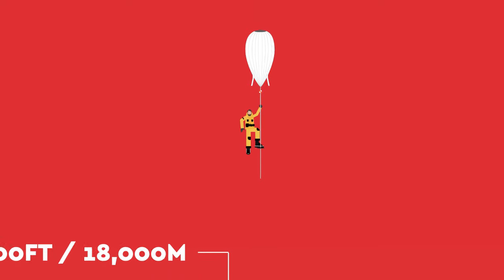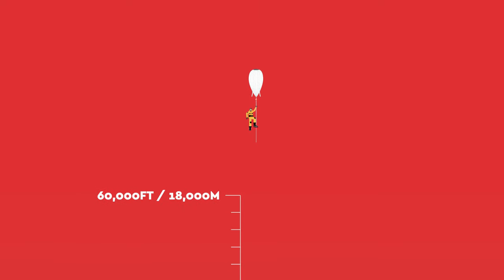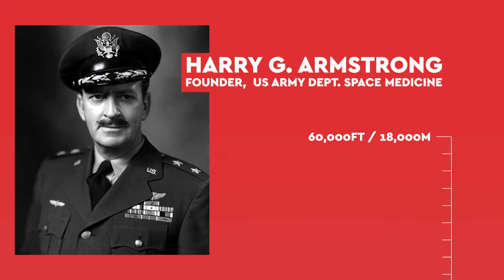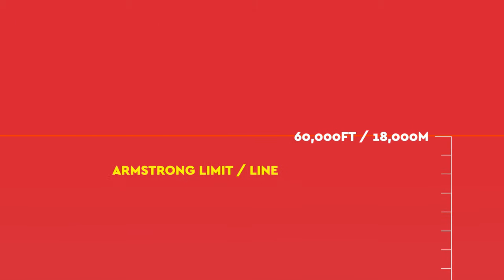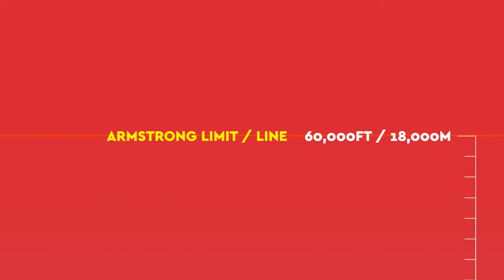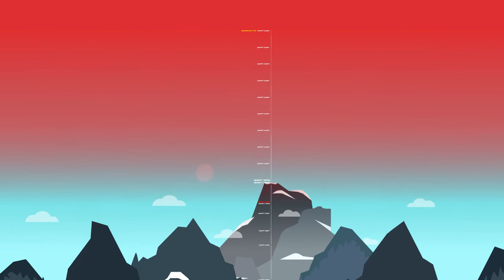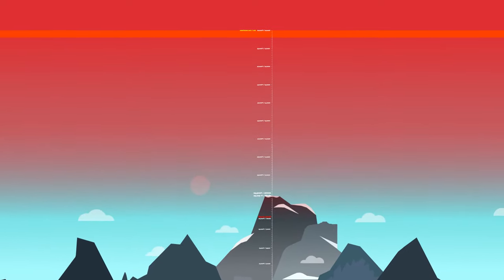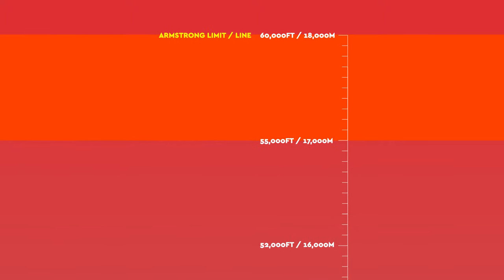Nonetheless, survival here will be extremely short-lived unless you are urgently repressurized. Humans are only able to survive above these heights with the use of specialized pressure suits or pressurized cockpits. Named after Harry G. Armstrong, the 60,000-foot or 18,000-meter Armstrong Limit or Armstrong Line is considered the absolute limit of human survival. Despite the name, however, it is not actually a hard line. Due to variations in the human body temperature, effects could occur as low as 55,000 feet or 17,000 meters.